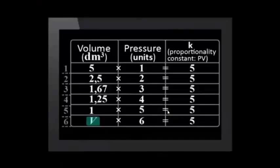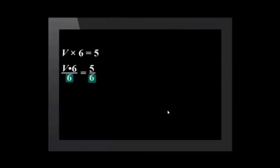5 times 1 equals 5. 2.5 times 2 equals 5. 1.67 times 3 equals 5. And so on. If you don't get exactly 5 for any of the lines of data, this is because of rounding off error.